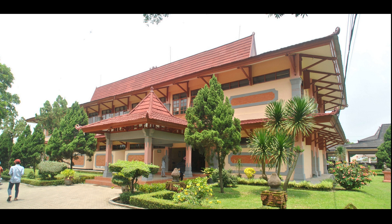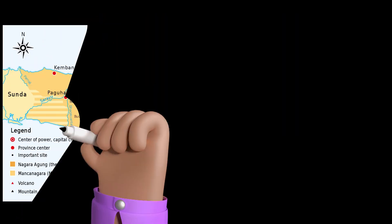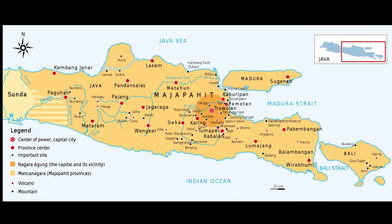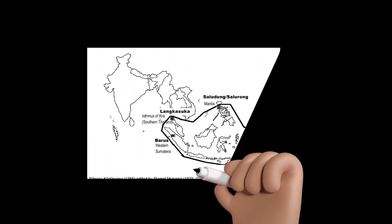Majapahit was founded in 1293 and reached its golden age during the era of Hayam Wuruk. Located in East Java, Indonesia, Trowulan had become the capital city of Majapahit, which extended the empire throughout Southeast Asia. These areas were later called as Nusantara.